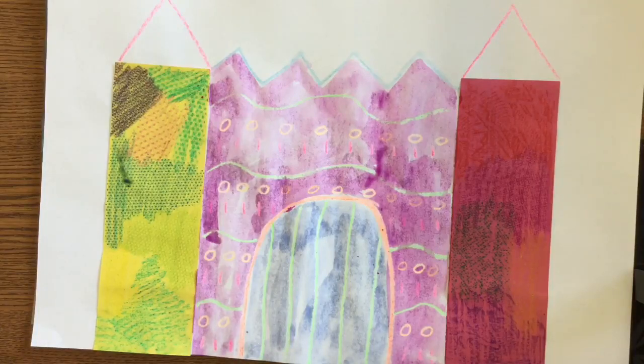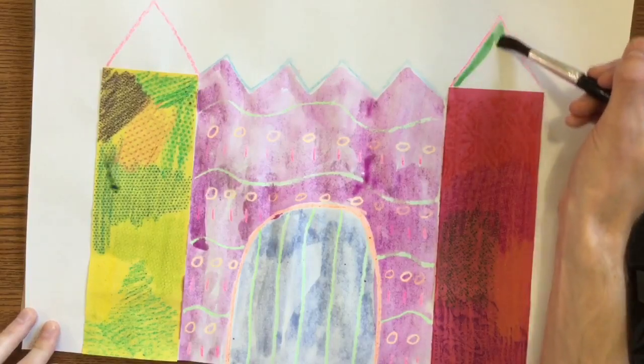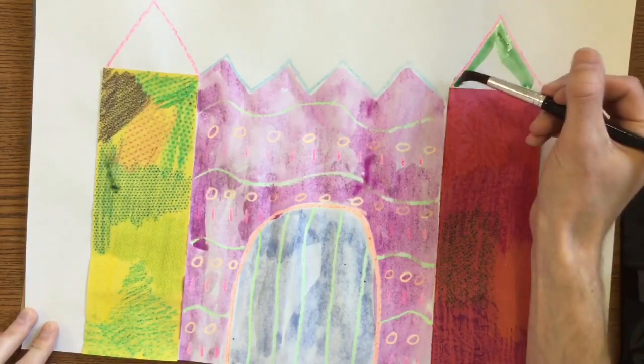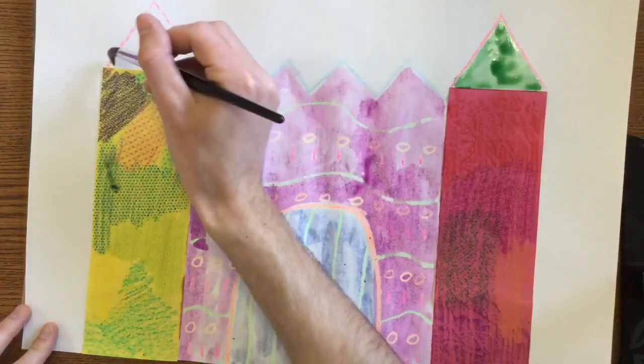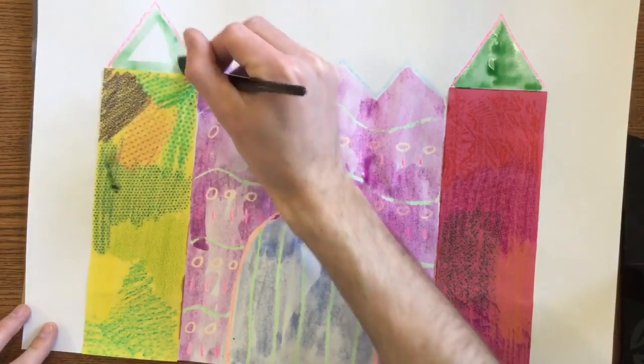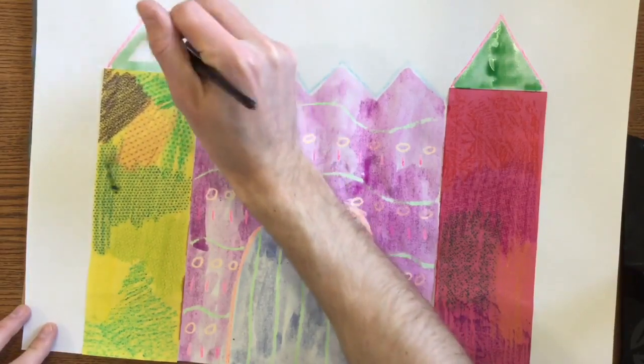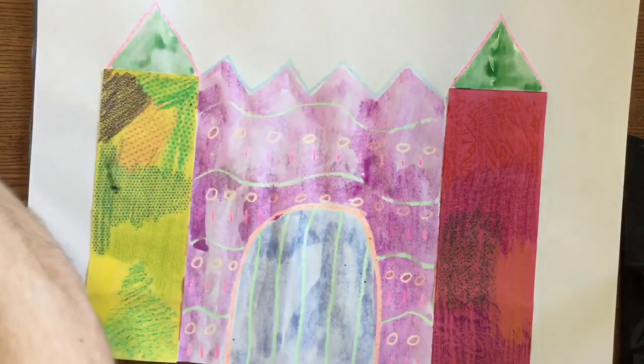But now I can paint my towers. You can do your towers two different colors if you want, or you can do them both the same. Your call. I'm going to do mine both the same. Using the toes of my brush every time I paint. All right, when you're this far, you're finished.